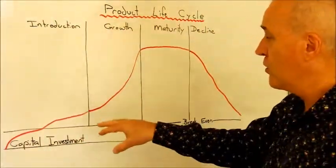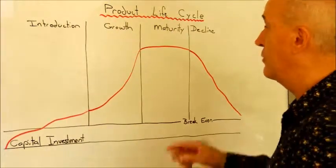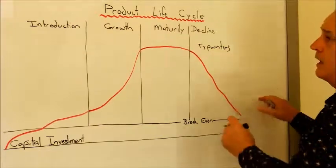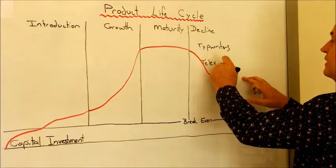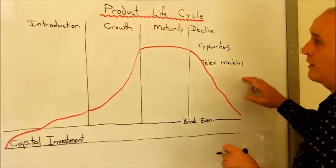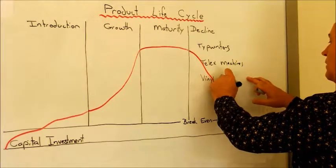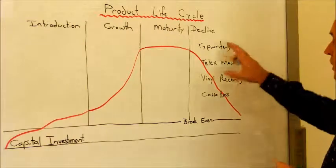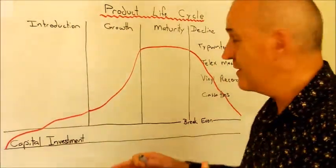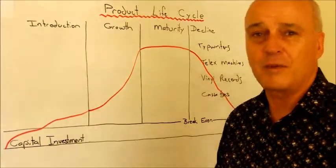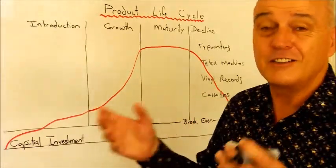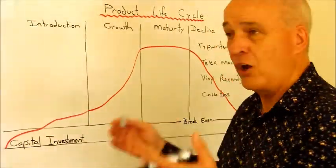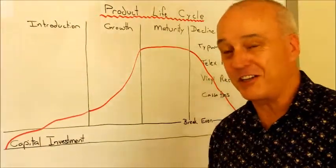The types of things that are currently going into decline would be things like typewriters, telex machines, vinyl records. You wouldn't want to be going out there and starting a business now dealing in those types of products, because there's just not much money. There is specialist demand, especially for vinyl records now. They're seeing a bit of a resurgence, but it's not the type of thing that if you wanted to go out and start a small business—it's okay having a niche market, but I don't know if you'd want to go out there and start working in vinyl records or telex machines.